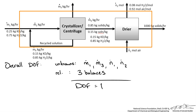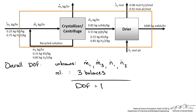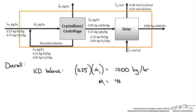A degree of freedom of 1 means we cannot solve for all unknowns directly. However, under more careful examination, we can see that N1 and N2 are just water and air, and M3 is just water — so only one stream carries potassium dichromate. We could do a potassium dichromate balance to solve for M1. We know that 25 weight percent of the entering feed stream M1 must equal our production rate, so M1 equals 4000 kg per hour.